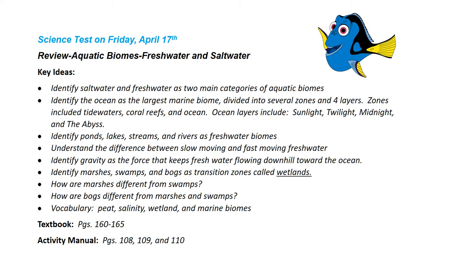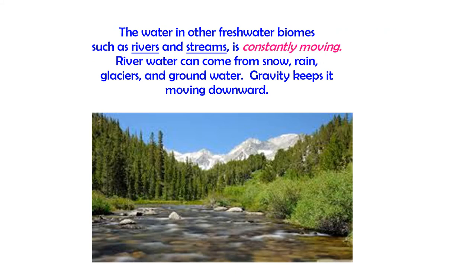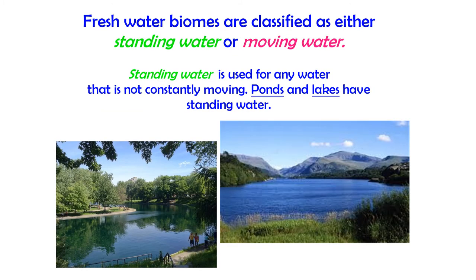The ocean layers include four: sunlight, twilight, midnight, and the abyss. You don't have to know particular animals found in each zone — I'd just like you to generally understand there are four layers in the ocean. Another key idea is to be able to identify the differences between ponds, lakes, streams, and rivers, because those are all our freshwater biomes, and to understand the difference between a slow-moving biome and a fast-moving biome. Standing water you'd find in ponds and lakes; moving water you would find in rivers and streams.